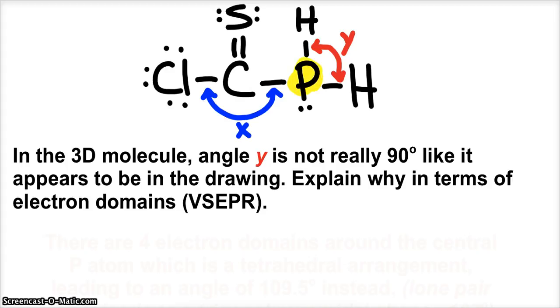And then around my phosphorus atom, I need to look at how many electron domains there are. So I see a hydrogen atom, another hydrogen atom, a carbon atom, and a lone pair. So that adds up to 4 electron domains around that atom.